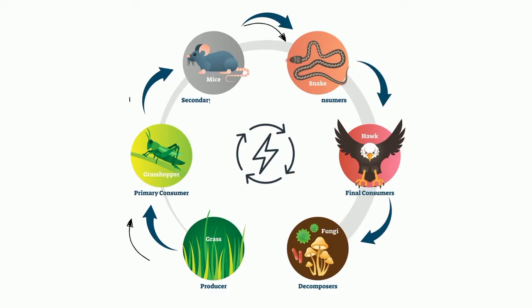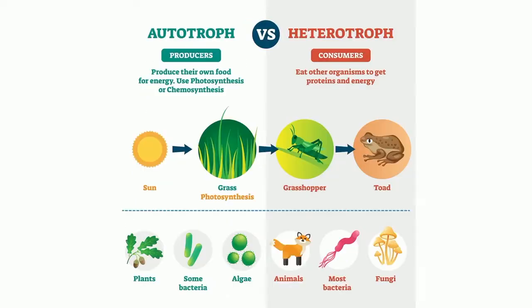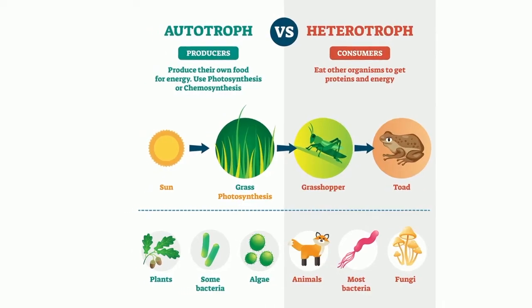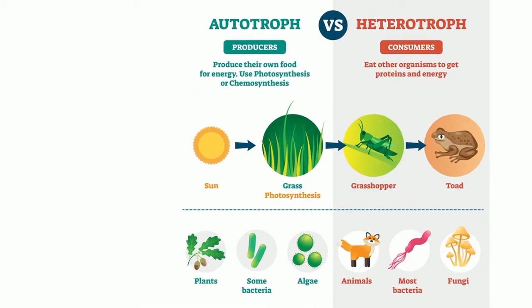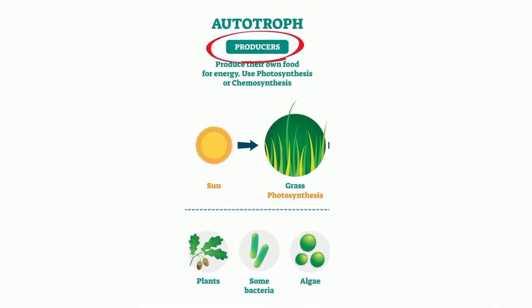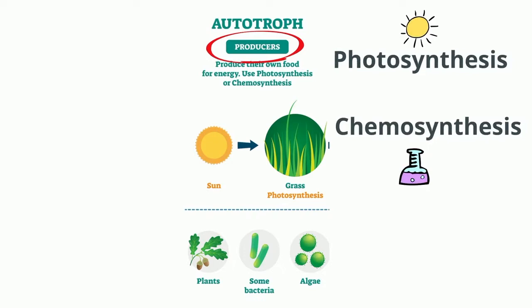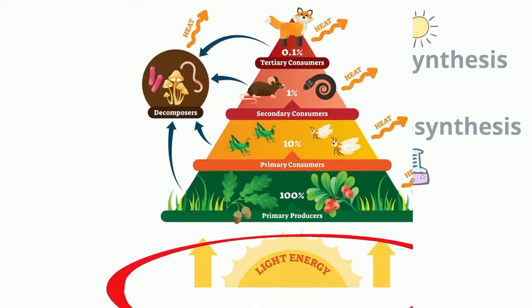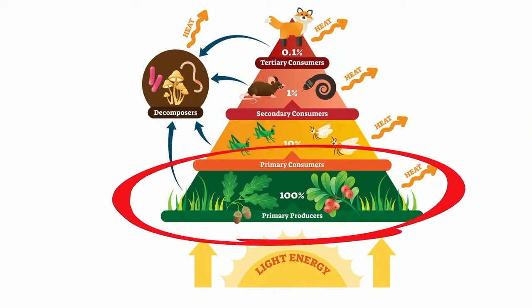There are a couple of key words that will help you understand a food chain. First is autotroph and heterotroph. An autotroph, which can also be called a producer, creates its own food for energy. A producer may use photosynthesis or chemosynthesis. Autotrophs are the foundation of every ecosystem on the planet.